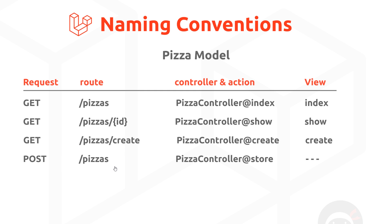When we send a POST request to this route, we're not going to the database to grab more stuff. Instead, inside a store action inside the pizza controller — following naming conventions — we're going to take the data from the form and save it to the database. We don't need a view for this because we're not returning a view; we'll take the data, save it, and then redirect to maybe the pizzas route or the welcome screen.